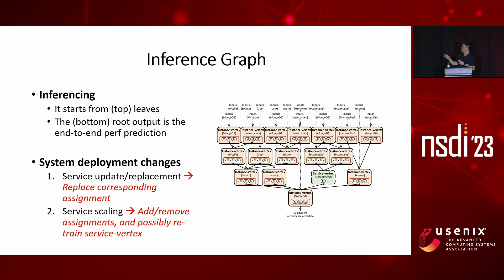When the deployment changes, we also need to update this inference graph to match the deployment setup. For example, whenever we add or remove services, we also have to add or remove assignments to the graph. Whenever we update or replace a service, we have to replace the corresponding assignment or vertices in the graph. In most cases, that reassembly is probably all you need to do. But in very unlikely events, you might need to do some retraining, and the paper also discusses a debugging mechanism that supports this.